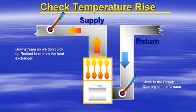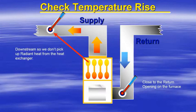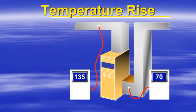To take the temperature rise on a gas furnace, you want to take the return air temperature close to the return opening on the furnace. We then want to take the supply air temperature downstream of the furnace so we don't pick up radiant heat from the heat exchanger.